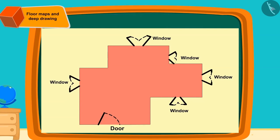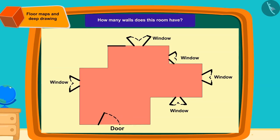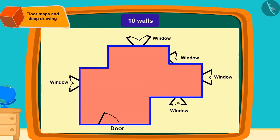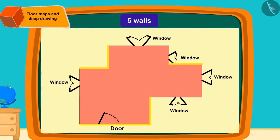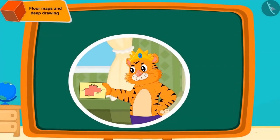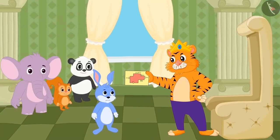The floor map has 5 windows. There is no window in the wall where the door is. This room has 10 walls, and 5 walls have no windows. The king liked Banni's floor map but could not determine how the room would look or how high the windows would be from the floor map alone, so he did not reward Banni.